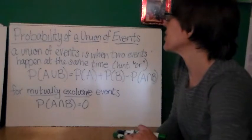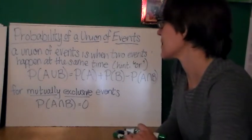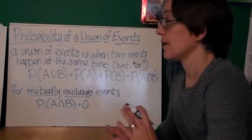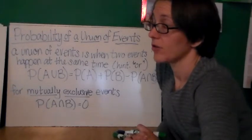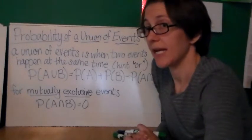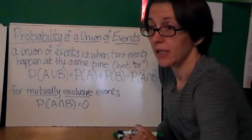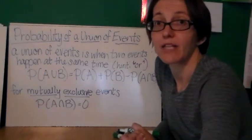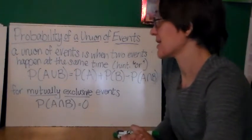Okay, the probability of a union of events. A union of events is when two events happen at the same time. Like, if I want to figure out what is the likelihood that I will draw a card from a standard deck, and it will be both a heart and a king. That's two events that have to happen at the same time.